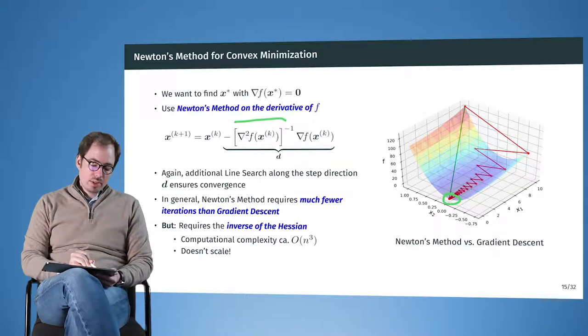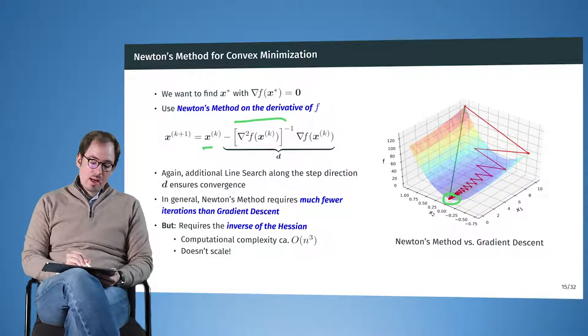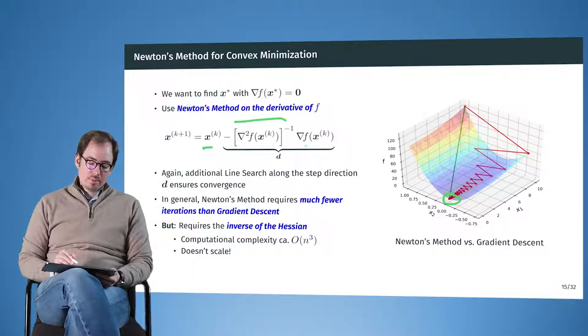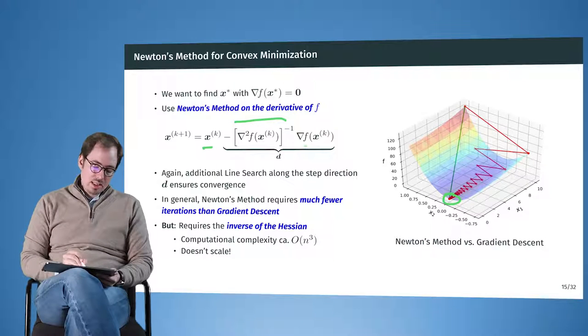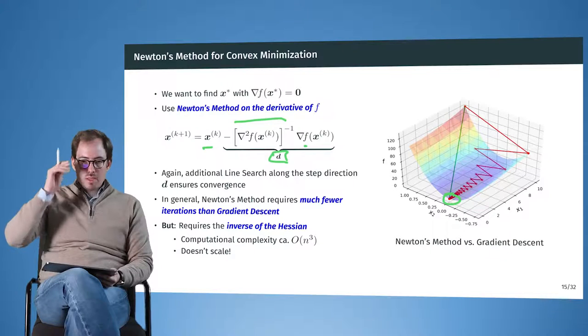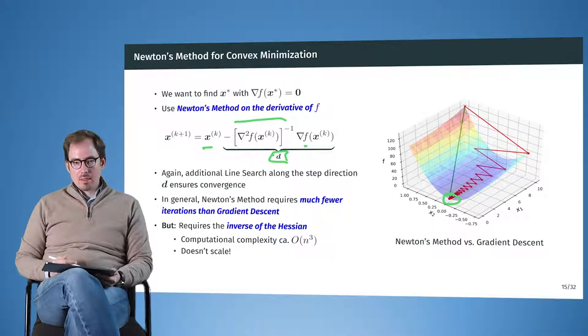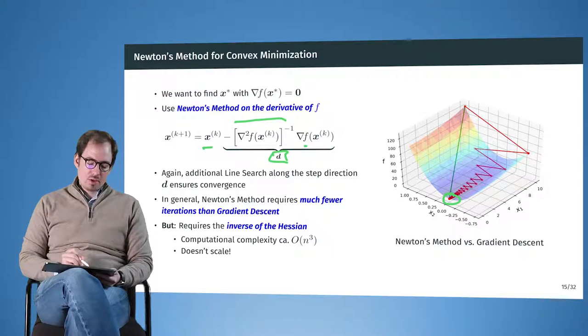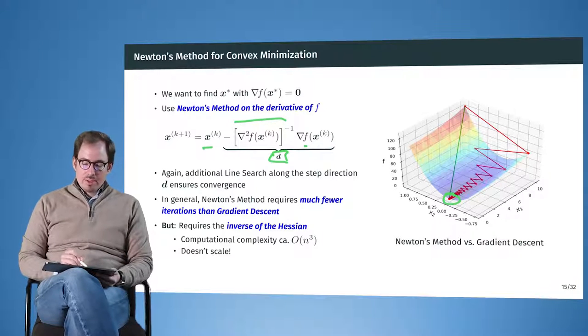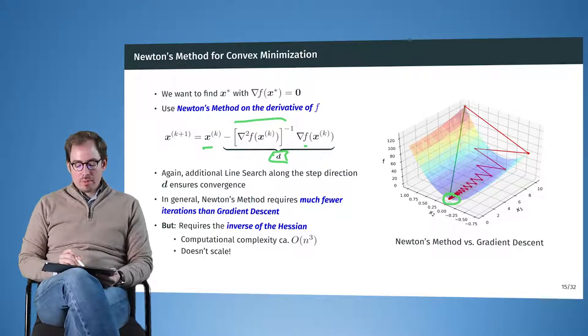On the next slide we will see exactly where this is coming from. So here we have the original point gradient, minus the Hessian at that point, taking the inverse of that Hessian, times the gradient at that point. And again, this d here, it gives us a direction in which to step, and we can further refine the step size by applying the line search on that step direction.